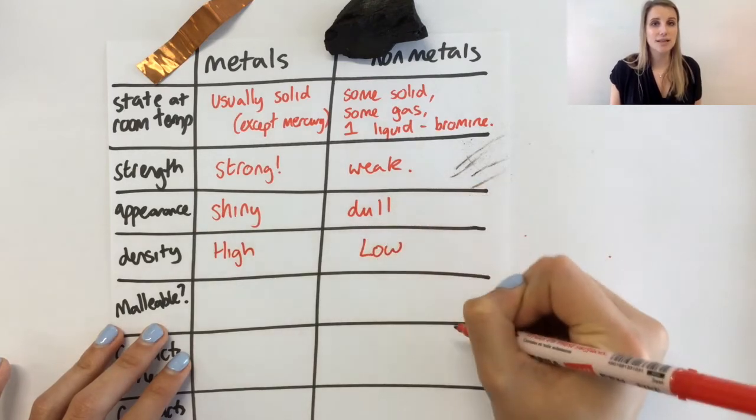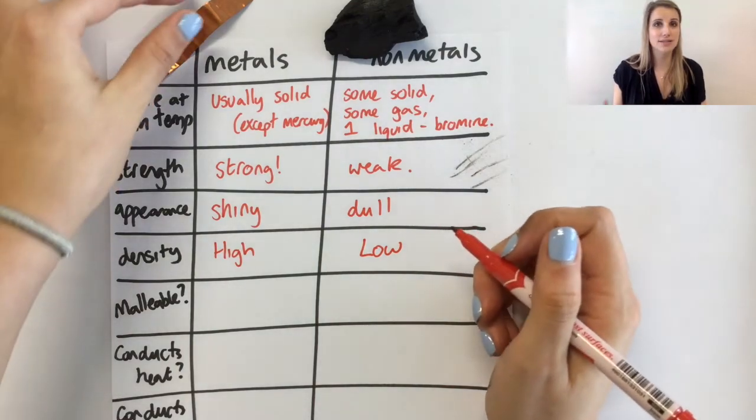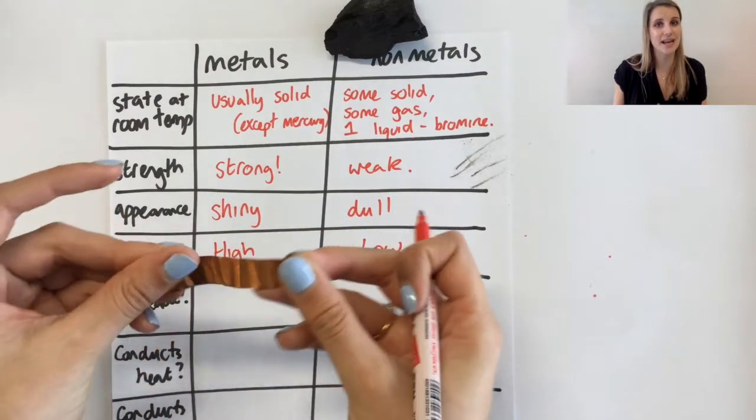Malleable means how easily it bends. You can see the copper here bends way easier. Whereas the carbon, if I try and break that up, it doesn't bend, instead it breaks, which is what's causing it to go onto the table.